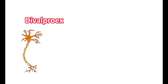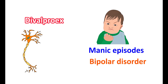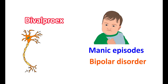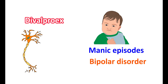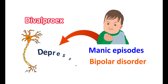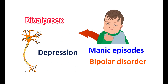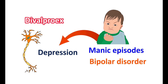Thereby, it can be used in the treatment of manic episodes in bipolar disorder. Mania is a condition of hyper-excitability due to overstimulation of neurons. Since divalproex can reduce neuronal activity, it can reduce the manic phase in bipolar disorder, where mood swings from mania to depression and vice versa.